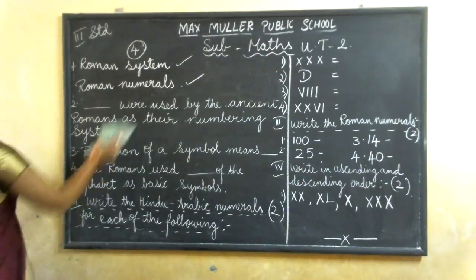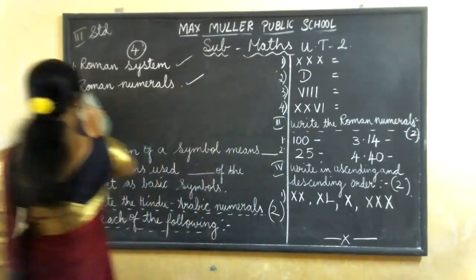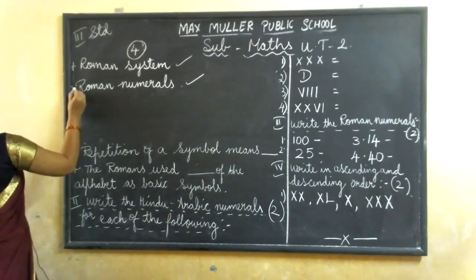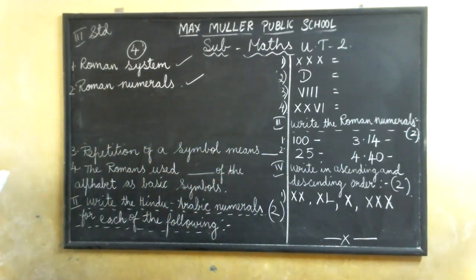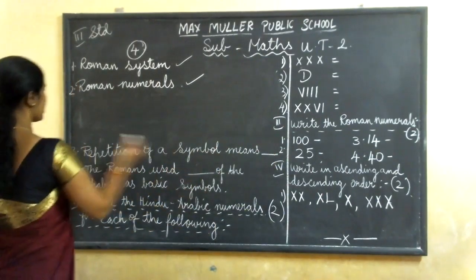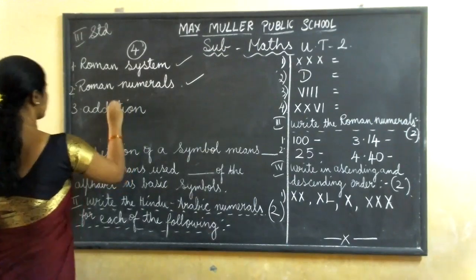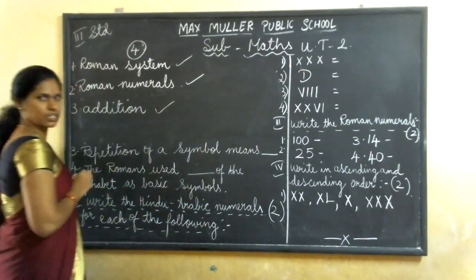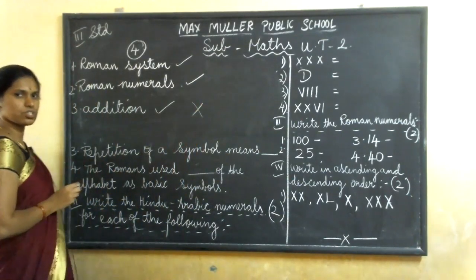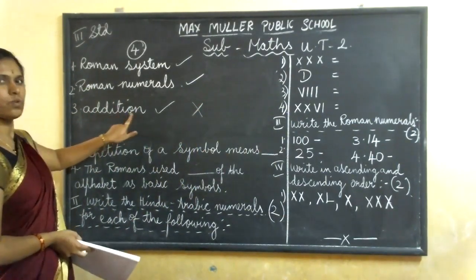I don't have place, so I will clean this one. Here, repetition of a symbol means what? Repetition of a symbol means addition. Third one is addition. Repetition of a symbol means addition. If your answer is correct, put a small tick; if it is wrong, put wrong. Check your spellings also — A, D, D, I, T, I, O, N — addition.